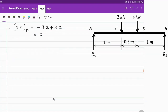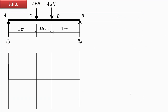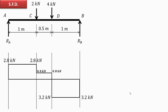These are the values for the shear force diagram. Drawing the shear force diagram: at A it is 2.8 kN; at C left it is 2.8 kN; exactly at C it is 0.8 kN; at D left it is 0.8 kN; exactly at D it is minus 3.2 kN; it remains the same up to left of B; and exactly at B it is 0 kN. This is the shear force diagram obtained.